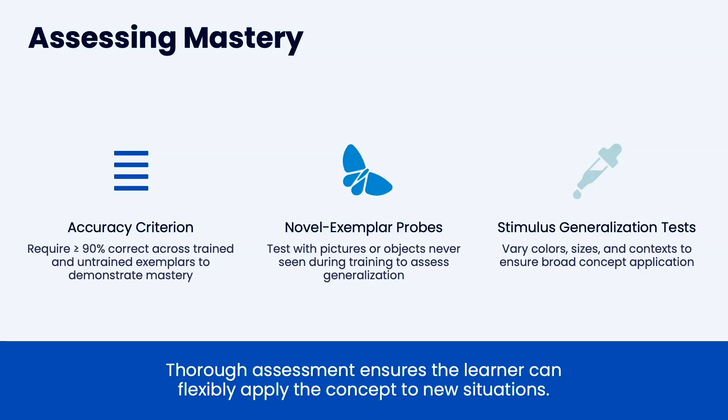What typically happens is you start with matching to sample procedures. Once they've learned a lot through matching to sample and emergent relations appear, you move to teaching concepts using the same accuracy and mastery criteria. You do novel probes to see if you have emergent relations — testing with pictures or objects they've never seen to check if the concept has generalized. Can they identify 90% of pictures of trees they're shown? Then you do a stimulus generalization test.